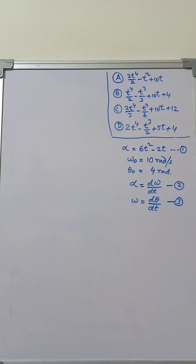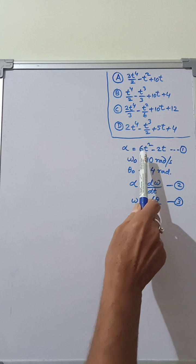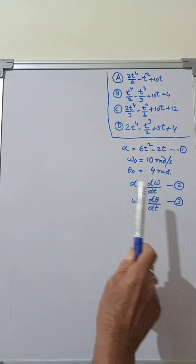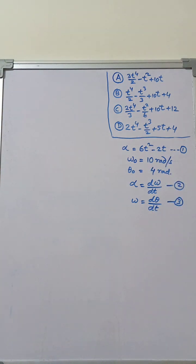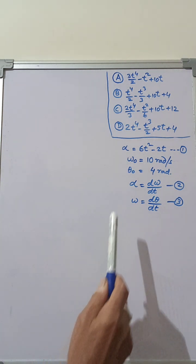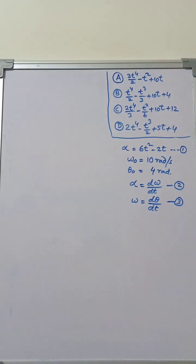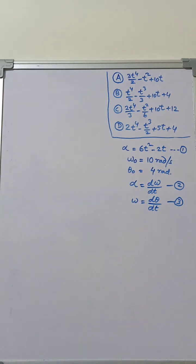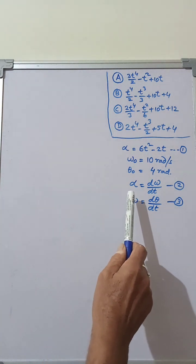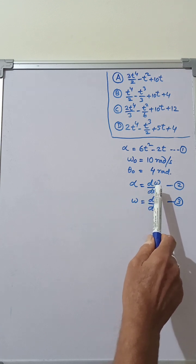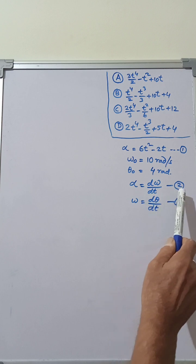For the solution, we retain the options and the given data. Angular acceleration equation: alpha equals 6t² minus 2t — we mark this as Equation 1. Initial conditions at t equal to 0: angular velocity omega₀ equals 10 radians per second. We also know that angular acceleration alpha equals the time rate of change of angular velocity, so alpha equals d-omega by dt — marked as Equation 2.